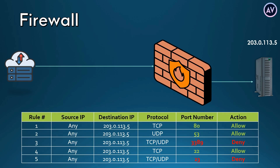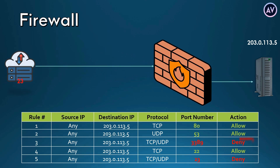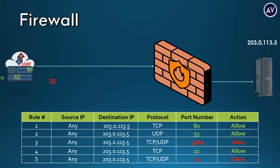For example, if the firewall rules are controlling access by port numbers, the rules may allow incoming traffic using port numbers 80, 53, and 22, and data using these ports is given access to the network. But the rules may also deny any traffic using port numbers 23 and 3389, so any incoming data on those ports will be blocked and won't get past the firewall. In a nutshell, this is how firewalls basically work.